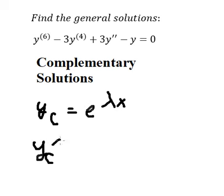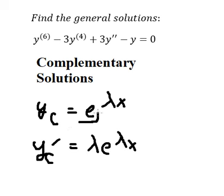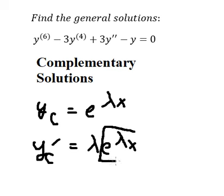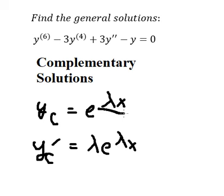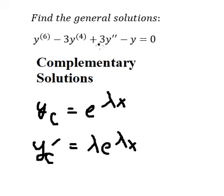We need to take the first derivative of yc, and we get lambda e to the power of lambda s, because when we differentiate e to the power of lambda s we keep e to the power of lambda s and then we differentiate lambda s to get lambda. Now we can work with these derivatives.